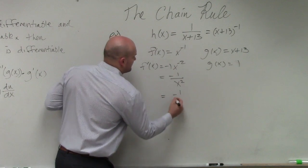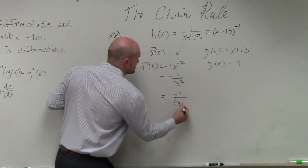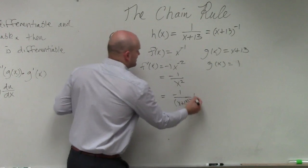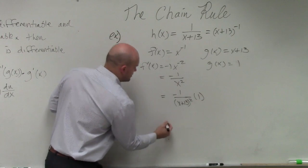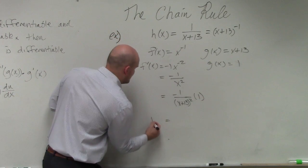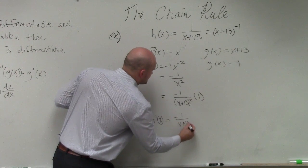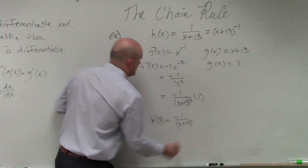So therefore, that's negative 1 over x plus 13 squared. And then therefore, that's times 1. So I'll just leave my final answer as h prime of x is equal to negative 1 over x plus 13 squared.